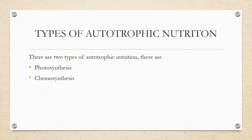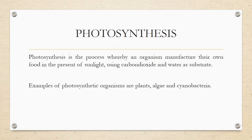Photosynthesis — let's divide it: 'photo' means light and 'synthesis' means to produce. So photosynthesis is a process whereby organisms manufacture their own food in the presence of light. In photosynthesis, light is involved, using carbon dioxide and water as substrates. Examples of photosynthetic organisms are plants, algae, and cyanobacteria.